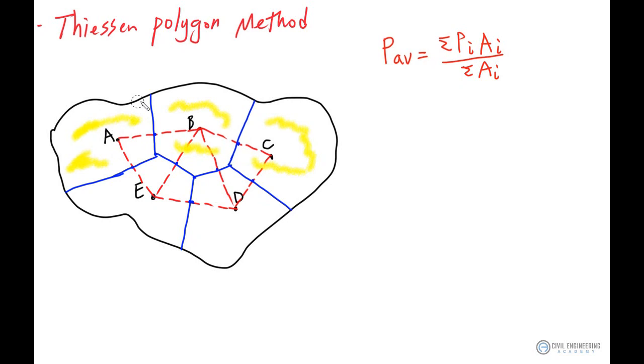So now you can use the results that Thiessen polygon method gives you to figure out the representative area for all these five rain gauges, and then insert that into your formula here to figure out the average rainfall precipitation. All right, so that's the whole idea. And I hope you understand, and I hope this video will help you understand the idea of the Thiessen polygon method. And I will see you guys next time.